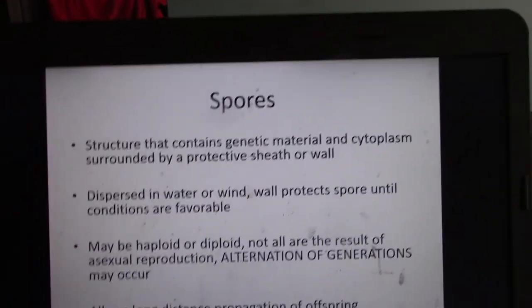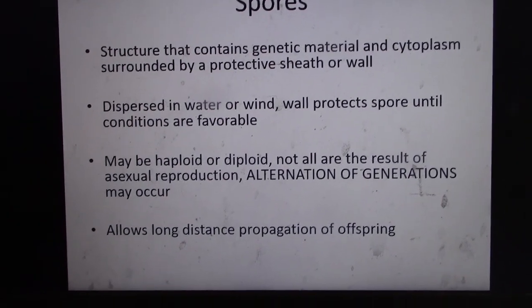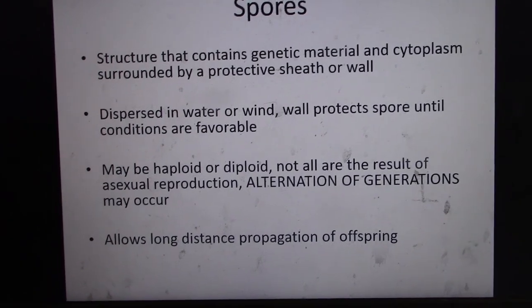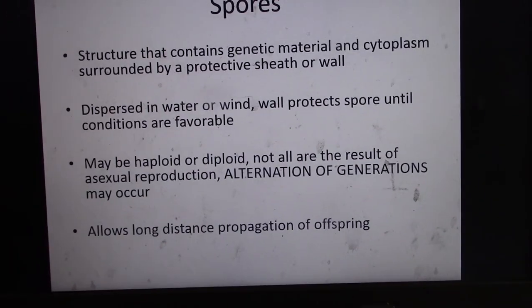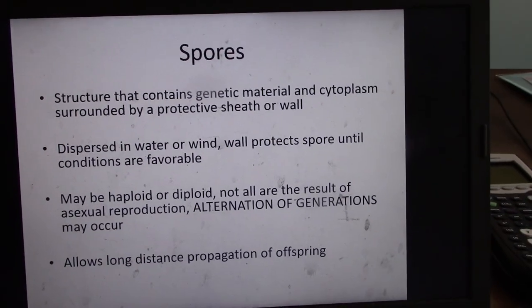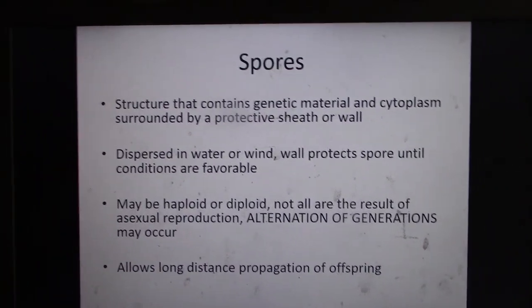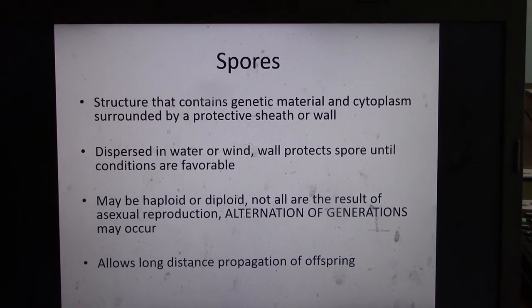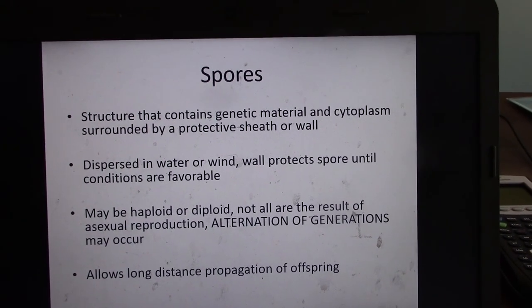Alternation of generations is what I'm going to talk about here. And on your textbook, it's page 575 to 579. With organisms that undergo alternation of generations, they have gametes and they have spores. And there's actually a body form that is haploid and a body form that is diploid. So they have different body structures to deal with immobility.